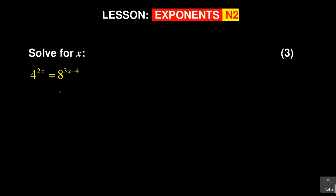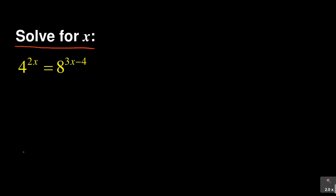Now look at this. We are given solve for x. That's what we're given here: 4 to the power of 2x is equal to 8 to the power of 3x minus 4. Now you are supposed to solve for x here.